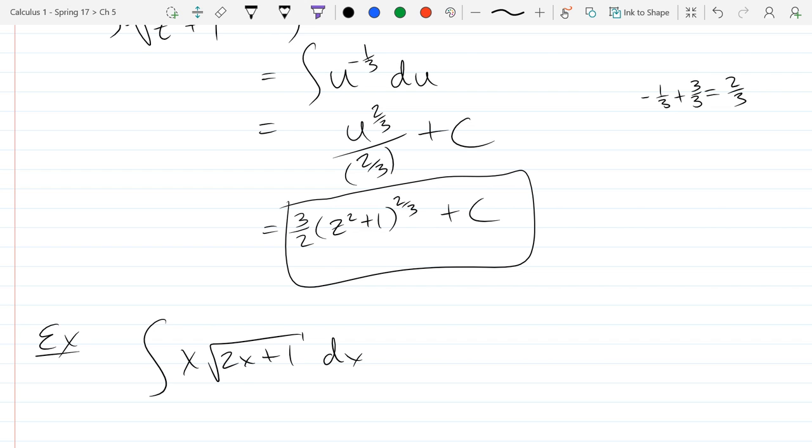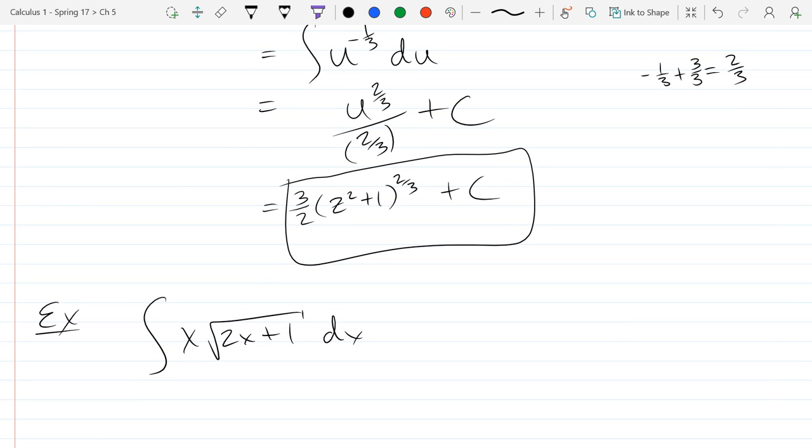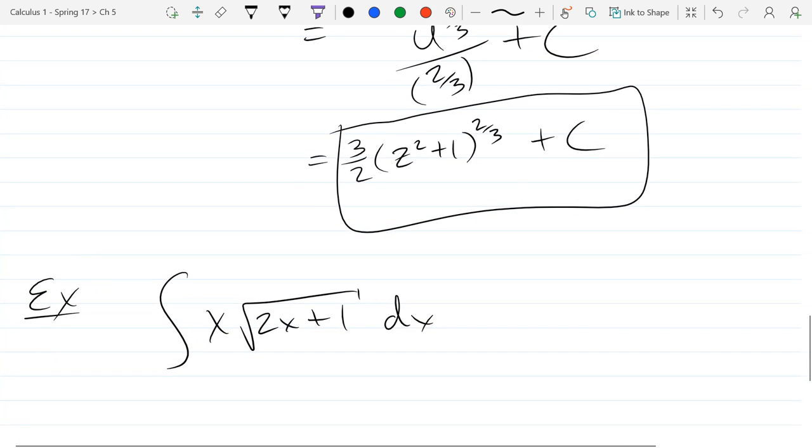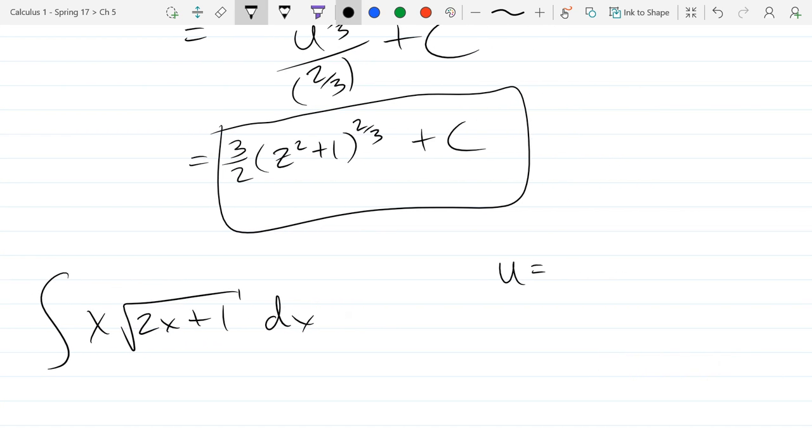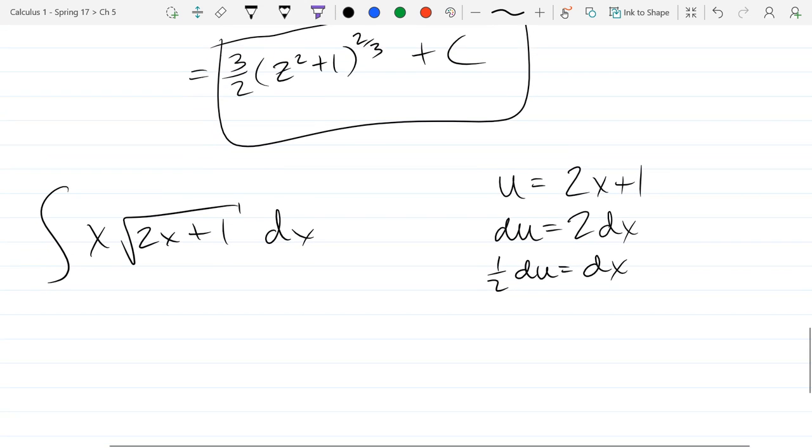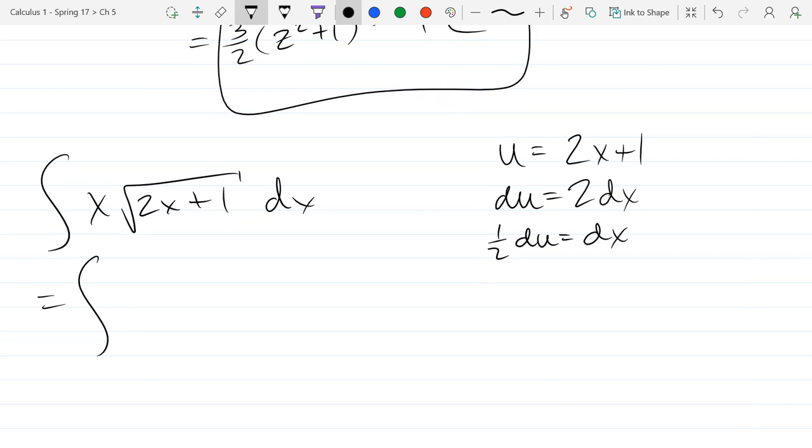So our next problem looks a little bit similar - it's got a square root and a product. But if I let u equal what looks like a reasonable choice here, I could try 2x plus 1. Let's do the next simplest thing. Let's not do the square root on the outside part. If this doesn't work then my next choice would be definitely a square root on the outside. So du is 2 dx. I don't see a 2, so 1 half du equals dx.